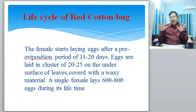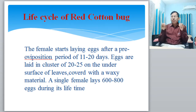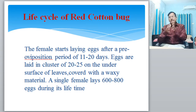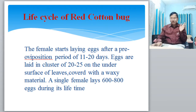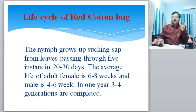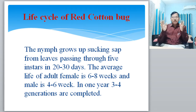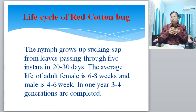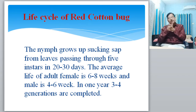The female starts laying eggs after a pre-oviposition period of 11 to 20 days. Eggs are laid in clusters of 20 to 25 on the underside of leaves, covered with a waxy material. A single female lays 600 to 800 eggs during its lifespan. The eggs are small, light blue, and oval in shape. They hatch in 7 to 12 days. In one year, 3 to 4 generations are completed.